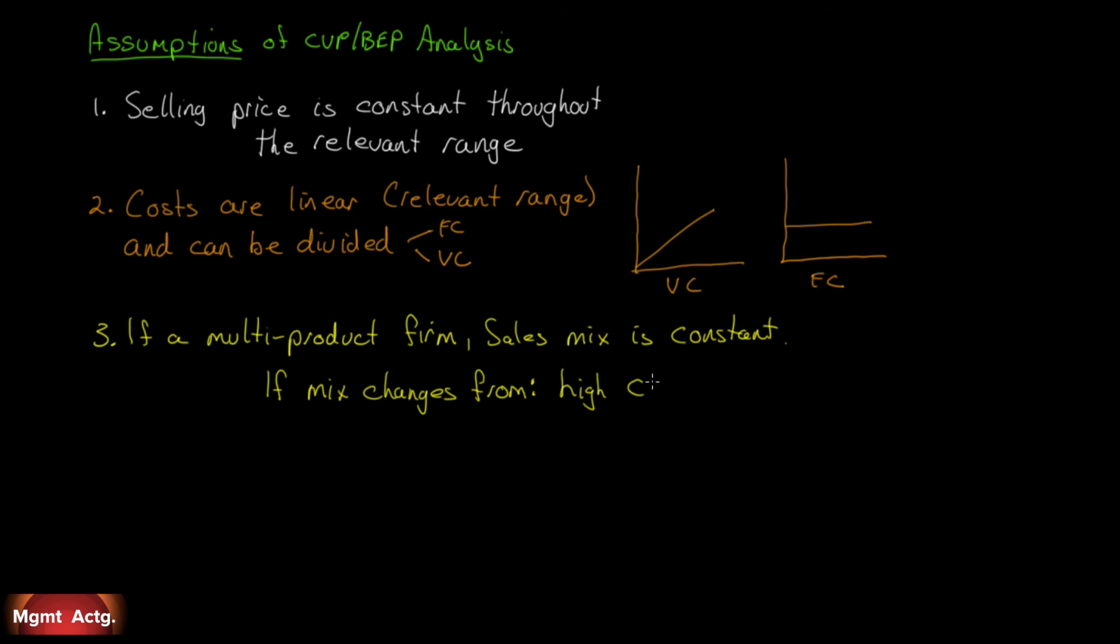If your mix changes from high contribution margin units to low contribution margin units, your breakeven point will go up. Your firm has become more risky. Your margin of safety has shrunk. If, on the other hand, you sell fewer of the low contribution margin units and you sell more of the high contribution margin units, your firm has become less risky. Your breakeven point drops. Your margin of safety increases. It matters what your mix is. And listen, in the real world, your mix will never be the same even from day to day.